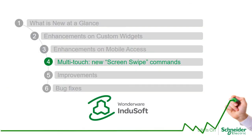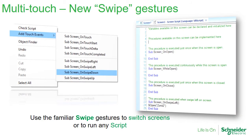Next, we're going to talk about the new swipe commands on the multi-touch feature. What we added are four new touch events: swipe right, swipe left, swipe down, and swipe up. The way it works — you can see on the screenshot on the right at the very bottom — on screen swipe left I put, for instance, to open another screen. So when you swipe a finger from right to left quickly, we're going to execute the script assigned to swipe left. In this case we're opening new screens, so this makes the experience very similar to swiping photos on your cell phone — you'll be able to swipe screens as well.